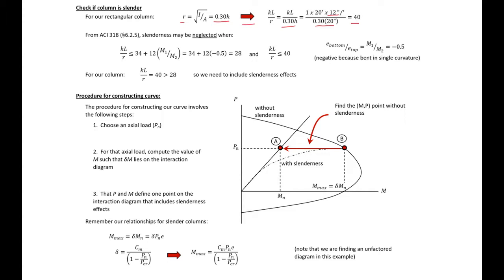Now we need to calculate our limits. The ratio of M1 to M2 equals the ratio of bottom to top eccentricity, which is −0.5 because our column is buckling in single curvature — if it were double curvature this number would be positive. Plugging that in, our KL/r needs to be less than or equal to 28 to neglect slenderness, and also less than 40. Our KL/r is 40, which is greater than 28, so we need to include slenderness effects.